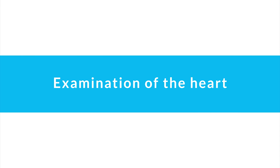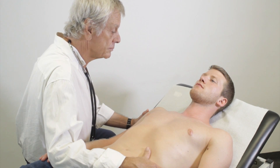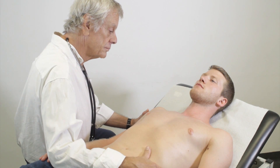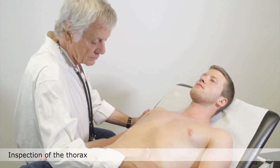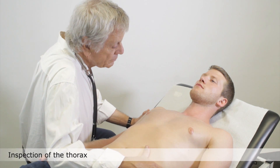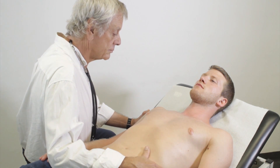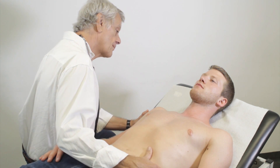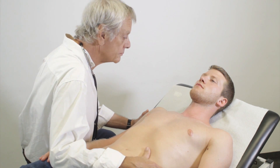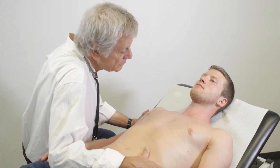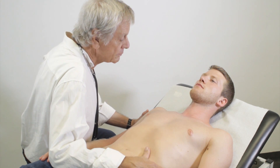Examination of the heart is performed with the patient lying supine and the upper body undressed. Begin with a general inspection which can reveal signs of cardiac illnesses. For example, a thoracotomy scar can indicate a history of cardiac surgery, and distended neck veins can be a sign of heart failure or superior vena cava syndrome.